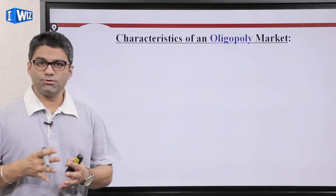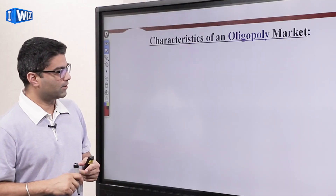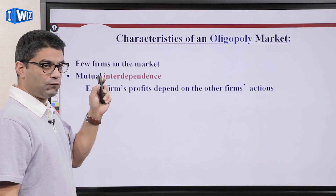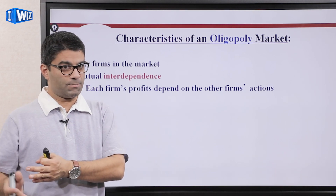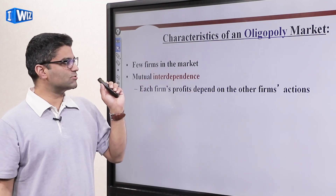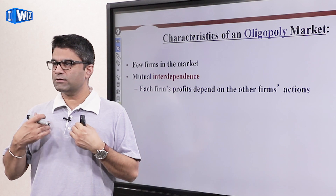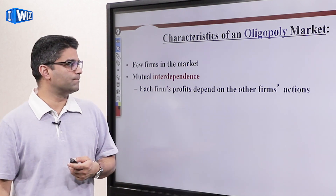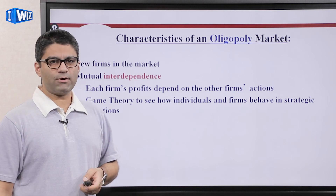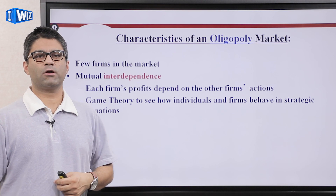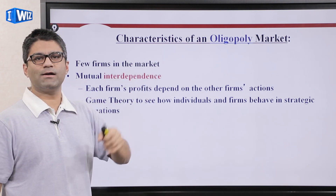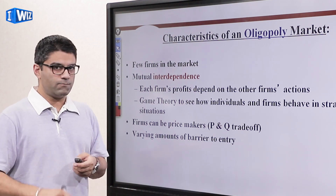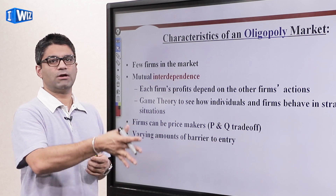Now let's look at the other imperfectly competitive market: oligopoly. Key characteristics: there are few firms — not many like monopolistic competition, but not just one like monopoly. Because there are few firms, there is mutual interdependence — what I do as a firm affects what others do. If I'm one of two firms, my actions matter to how the other firm reacts. Game theory, an important part of microeconomics we won't cover here, comes into play. There's also some degree of market power and some barriers to entry — not as high as monopoly but more than monopolistic competition or perfect competition.